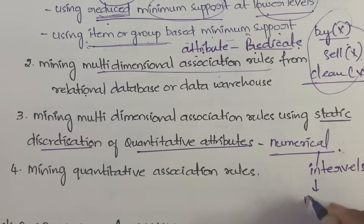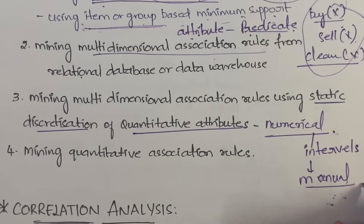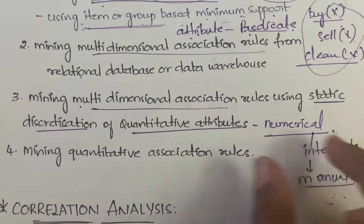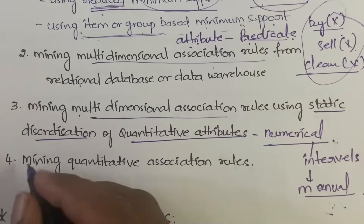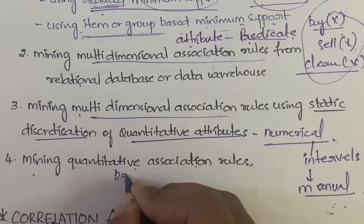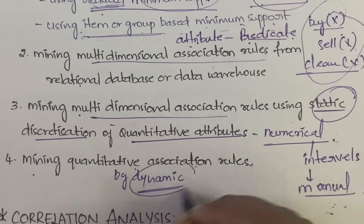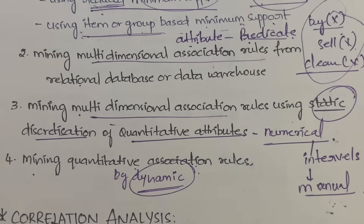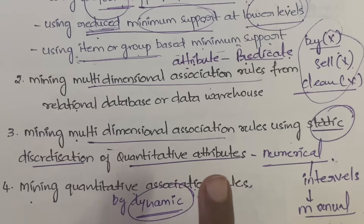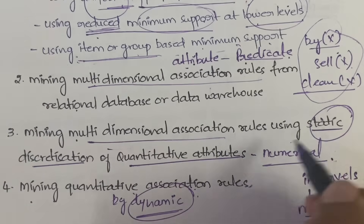Static discretization means you manually divide the numerical data into intervals according to your preference. The multi-dimensional association rules are divided into intervals using static, that is manual, methods. The fourth type is mining quantitative association rules by dynamic discretization — same as the static approach but instead the system itself automatically determines the intervals based on requirements.